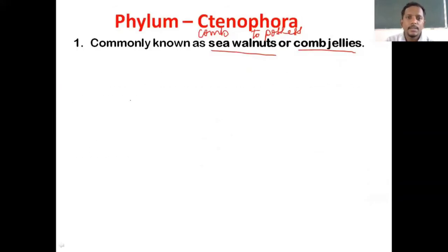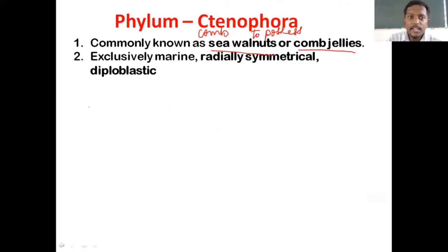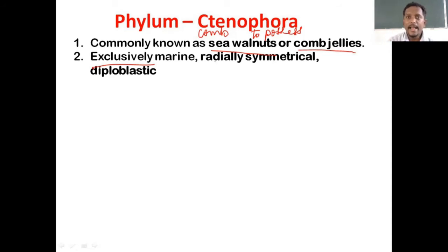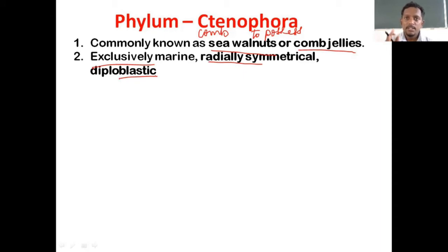They are exclusively marine — meaning they are not found in fresh water at all, only in marine water. Regarding body symmetry, similar to phylum Coelenterata, Tenophorans also have radial symmetry. And regarding the number of germ layers, exactly like phylum Coelenterata, Tenophorans have a diploblastic body condition. That's why I recommend going through session 4 on phylum Coelenterata again before this session. Tenophorans also have tissue-level body organization.